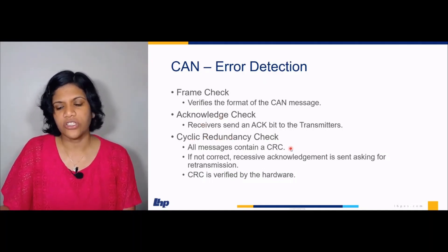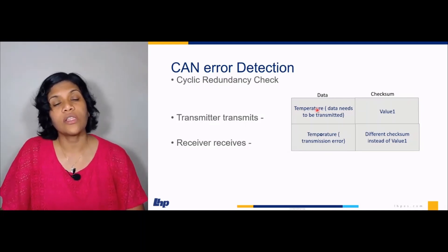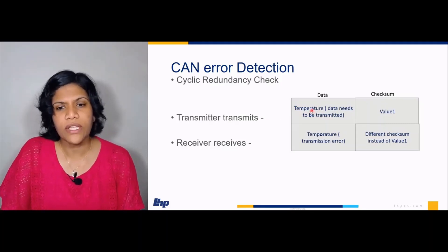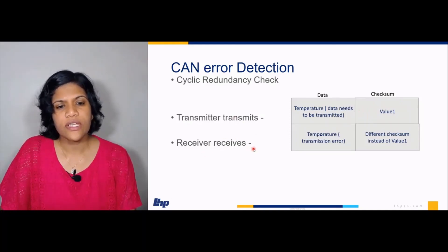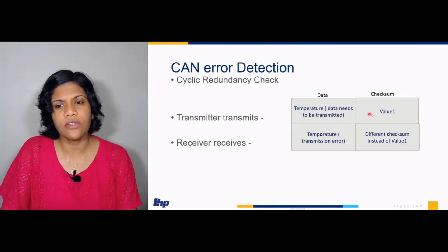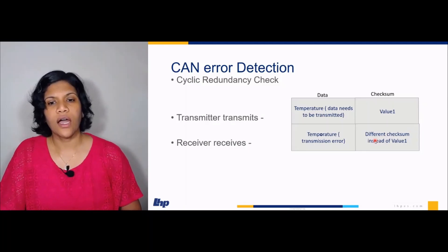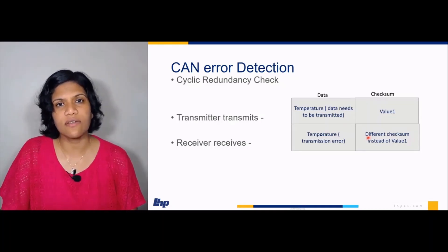Next is cyclic redundancy check. For a simple explanation, I have used temperature as an example, though all messages are actually transmitted as bits. For every data, a checksum value is calculated and added with the data itself. When the receiver receives the data, if a transmission error has occurred, the checksum value calculated at the receiver will be different. It is then determined that an error has happened, and a negative acknowledgement — a recessive bit of one — will be transmitted asking for retransmission of the data.